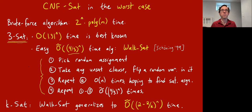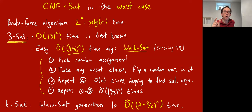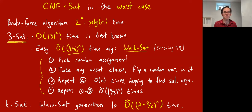It's called the WalkSAT algorithm due to Schöning from 1999. Here's how it goes: you're given your 3-SAT formula, pick a random assignment, and check to see if it's satisfiable. If it's not satisfiable, then take any clause that's unsatisfied — a clause is an OR of three literals, and this current assignment must be making all three literals false. Just take any of the variables appearing in that clause and flip its value. That'll actually make that clause now satisfied. It might make some other clauses satisfied and some unsatisfied. Just take any unsatisfied clause, flip a random variable in it, and do this step order n times.